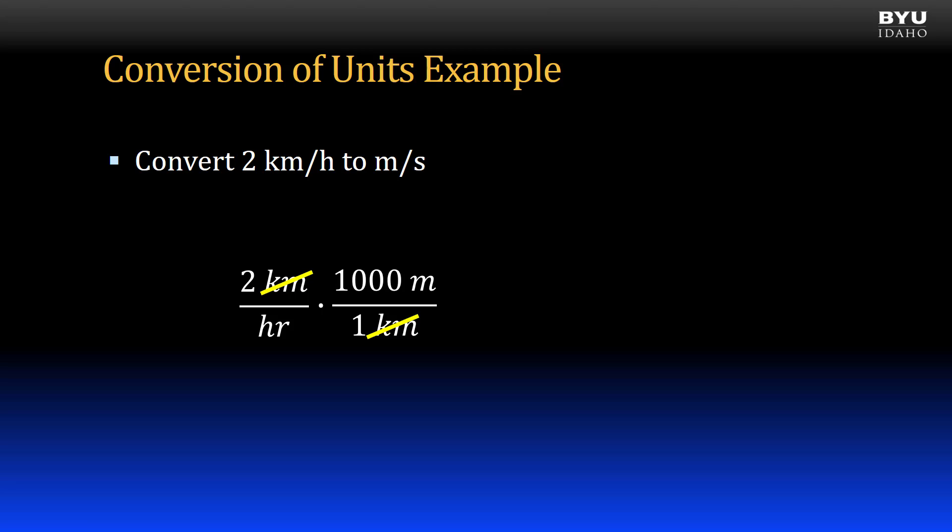Now I need to convert hours to seconds. I need to think about the relationship between hours and seconds. I can think in terms of minutes and hours and determine how many minutes are in an hour. Then I can think about the relationship between minutes and seconds and determine how many seconds are in those minutes. Or I can combine those factors into one and say that there are 3,600 seconds in an hour.